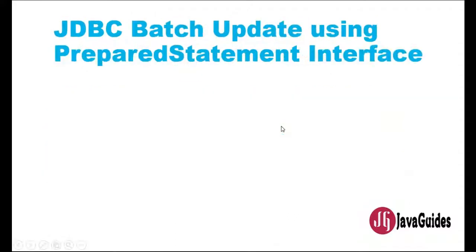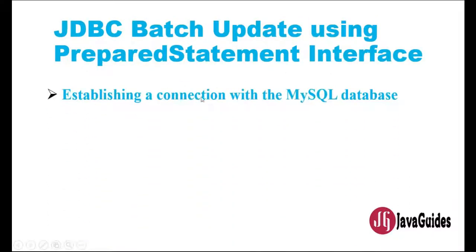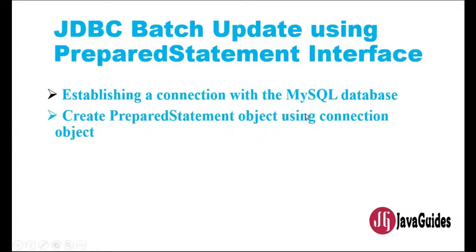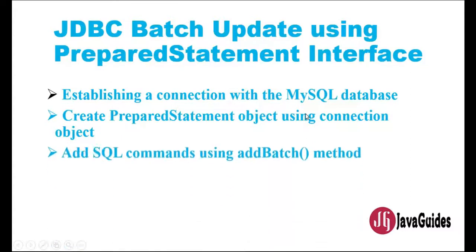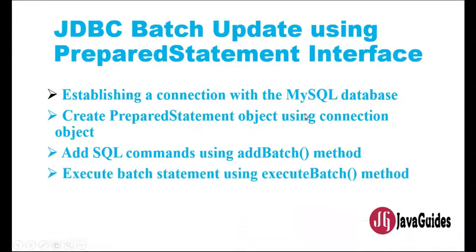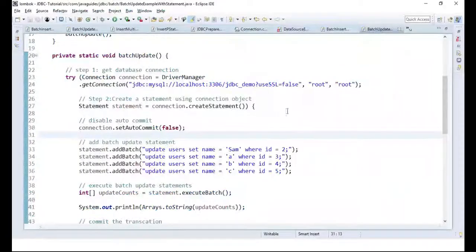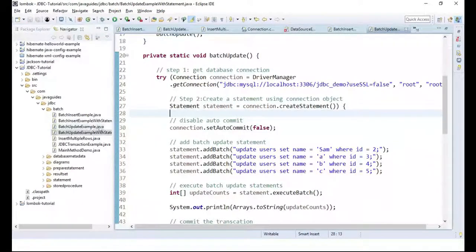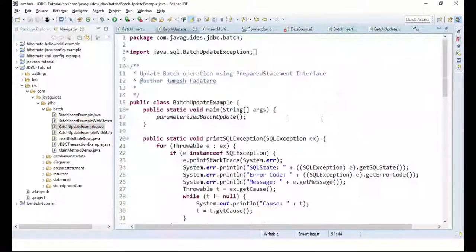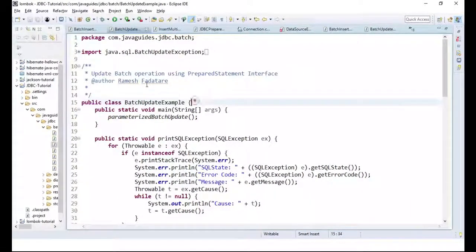Now let's look at the same example using the PreparedStatement interface. The steps are similar: first establish a connection with the MySQL database, then create a PreparedStatement object using the connection object, add SQL commands using addBatch, execute the batch, and use try-with-resources to automatically close the JDBC resources.